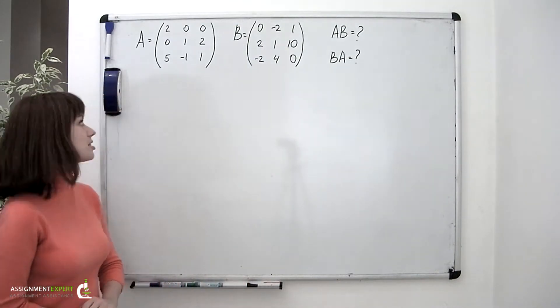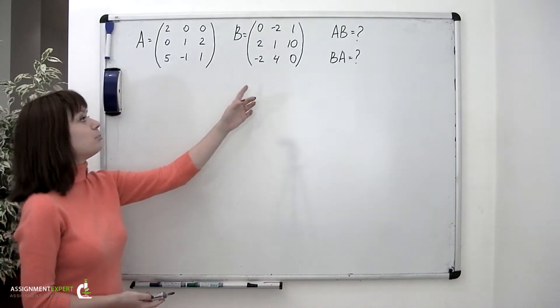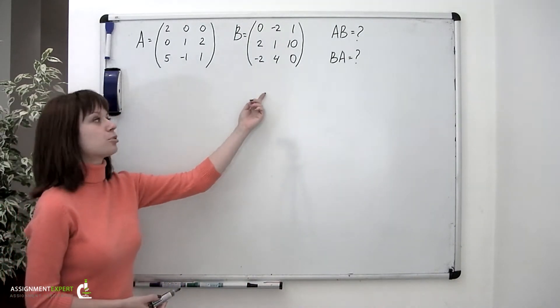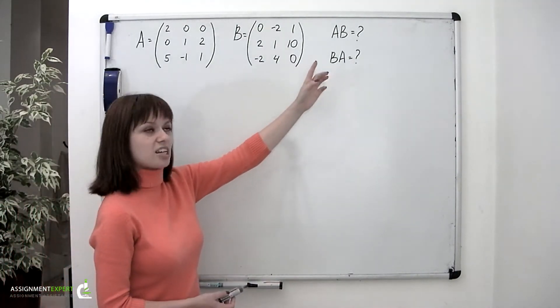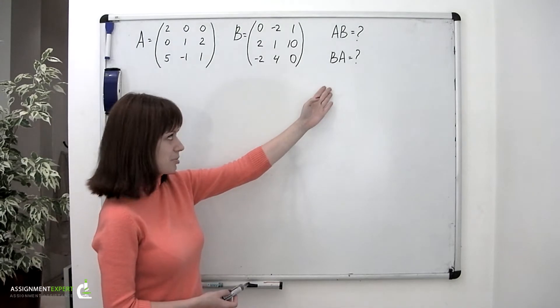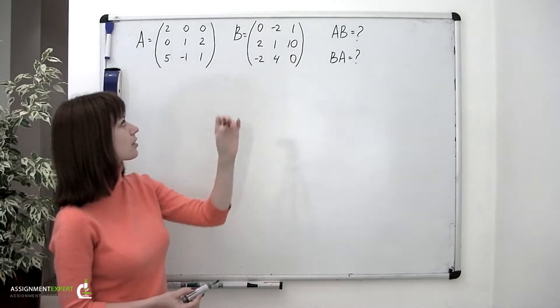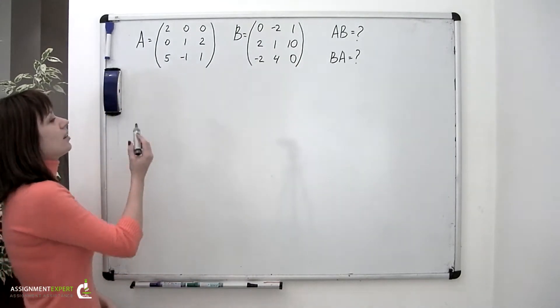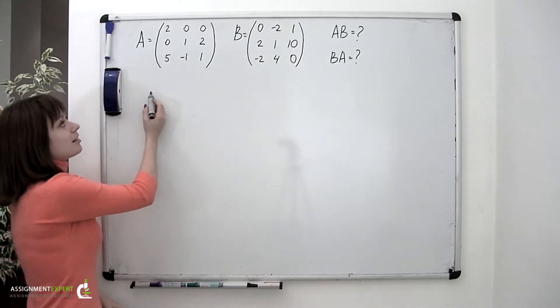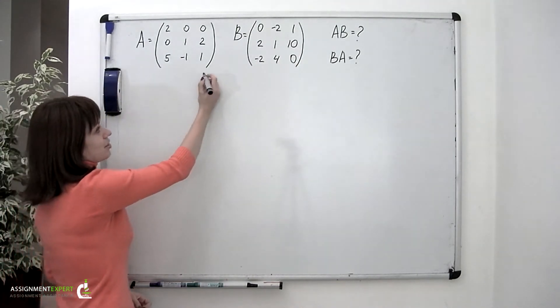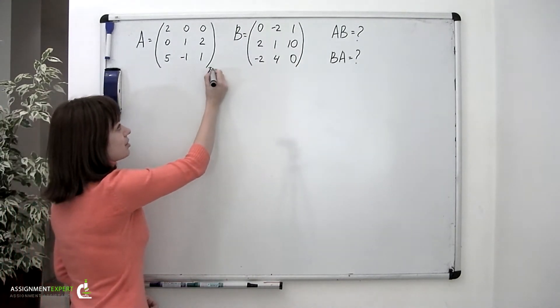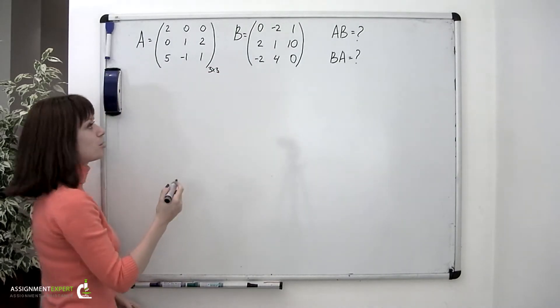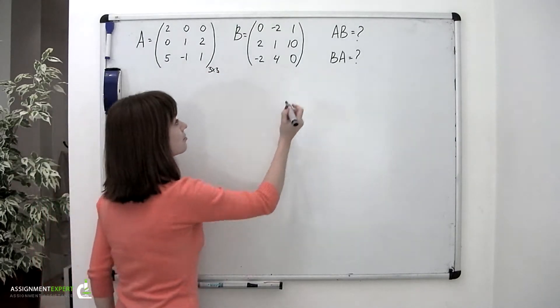We have two matrices, A and B, and we need to find their products, A times B and B times A. Matrix A is a square matrix of size 3 by 3, and so is matrix B.